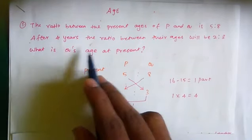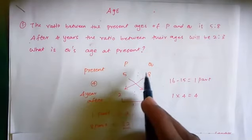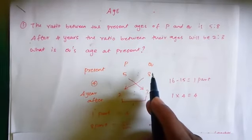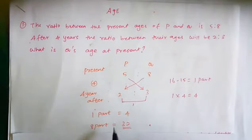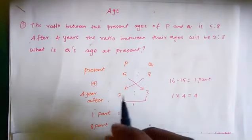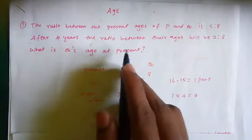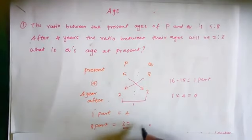What is Q's present age? Q's present age is 8 parts. 1 part equal to 4. So 8 parts equal to 32. So Q's present age is 32 years.